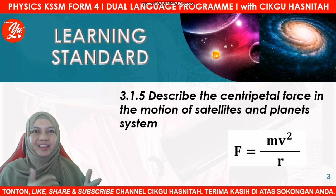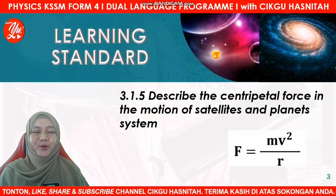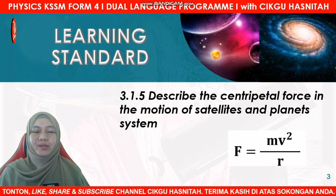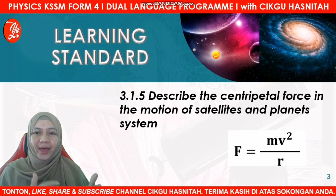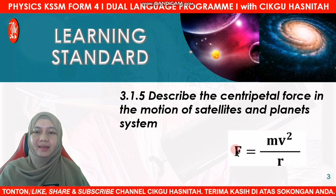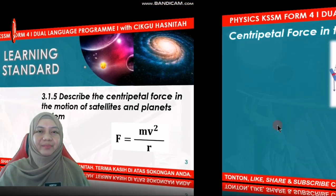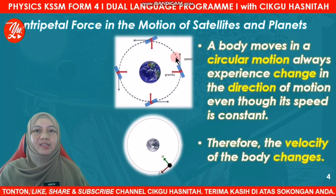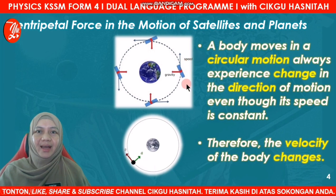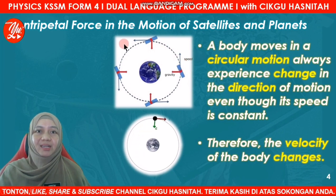Students, in Learning Standard 3.1.5, each and every one of you must know how to describe the centripetal force in the motion of a satellite and planet system, where the formula applied is F = mv²/R. So, if you refer to this diagram, you can see that there is a body moving in a circular orbit around the Earth.